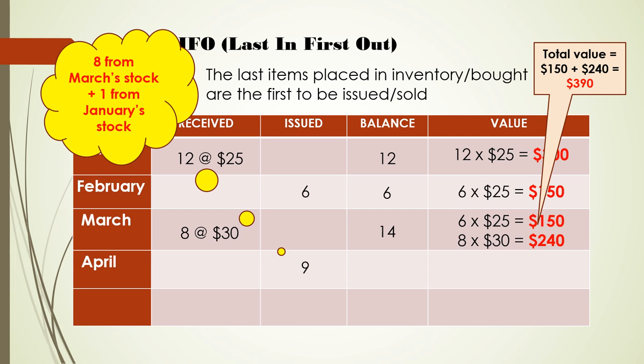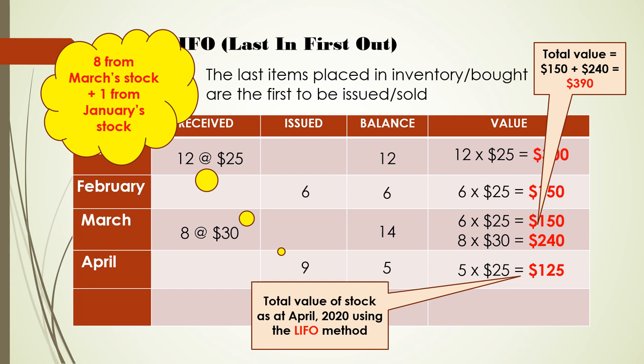Using the last in first out method, our balance of stock remaining would be 5 reams. Our March balance was 14 reams; however, we issued 9 of those reams in April. Therefore, 14 subtract 9 equals 5. The value of our stock as at the end of April would be 5 reams at $25, because the remaining stock comprises January's stock. Therefore, the total value of our stock as at the end of April using the last in first out method would be $125.